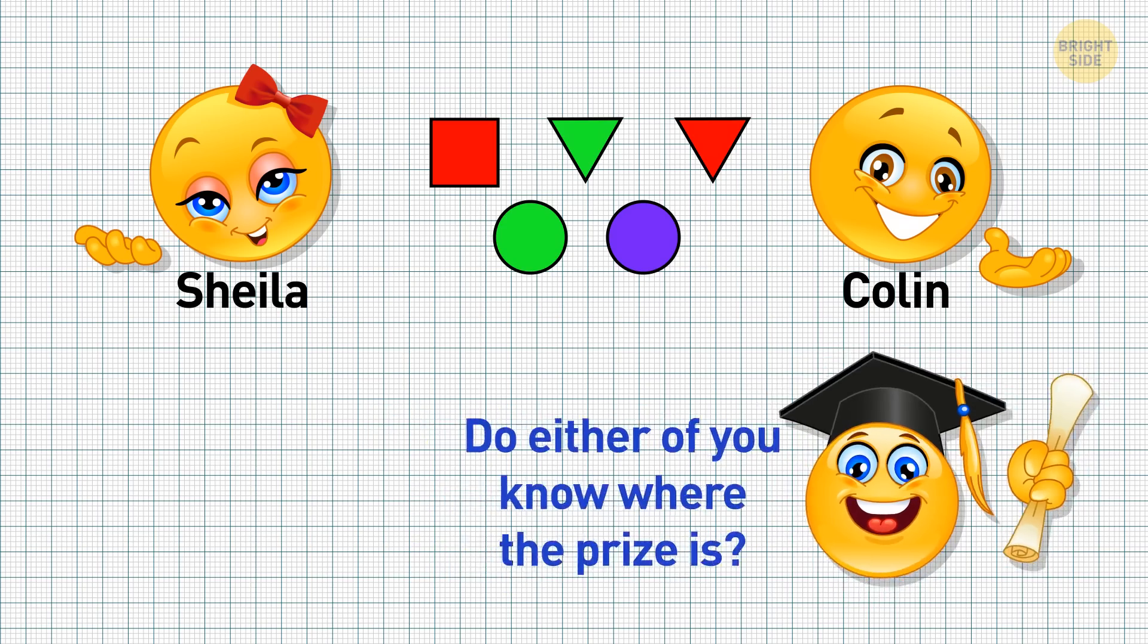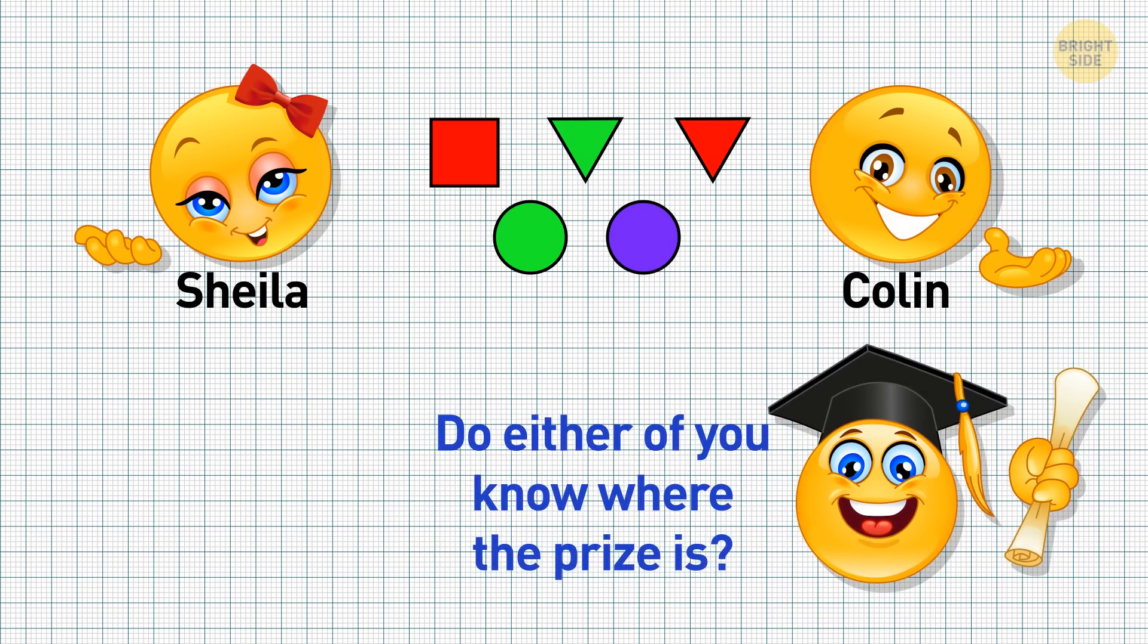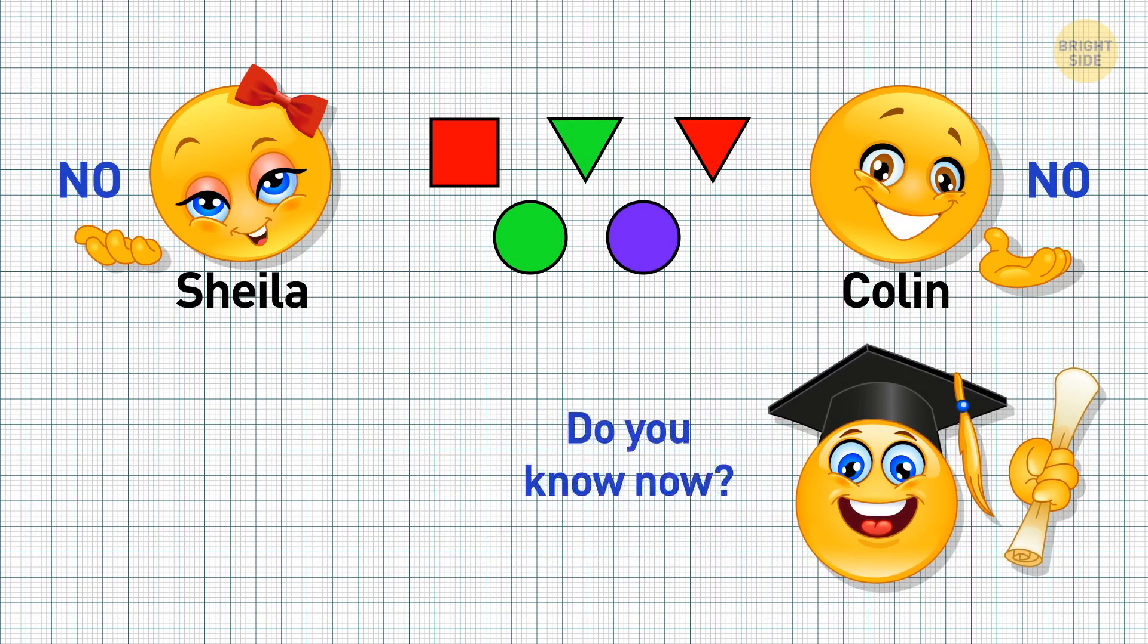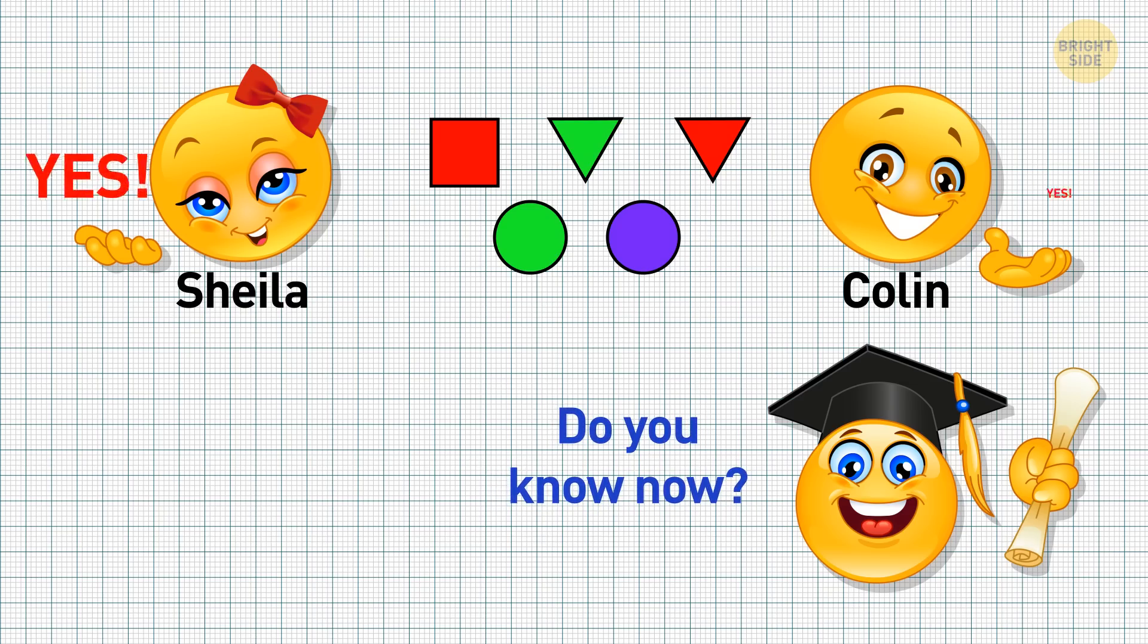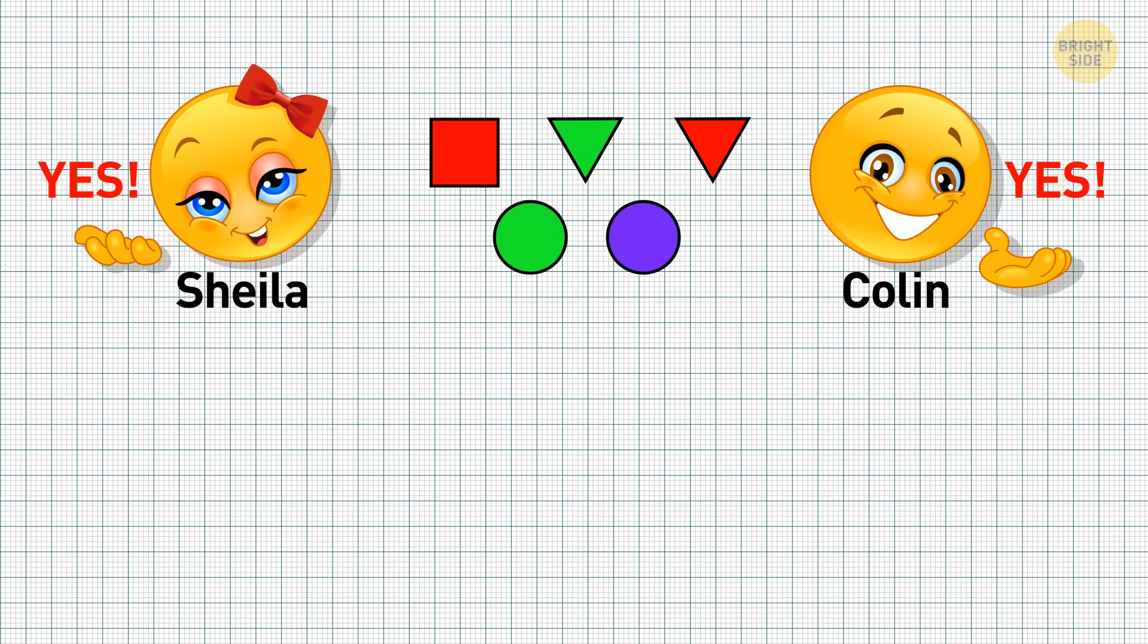The host asks them, Do either of you know where the prize is? The players say, No. The host then asks, Do you know now? They both shake their heads. The host asks again, Do you know now? And the players answer, Yes, in unison. How can this be? And where is the prize?